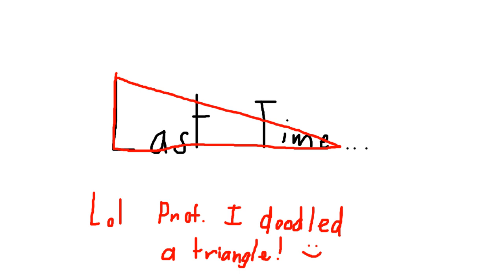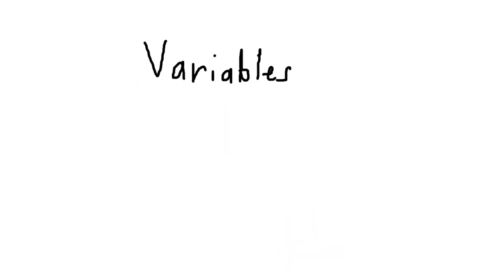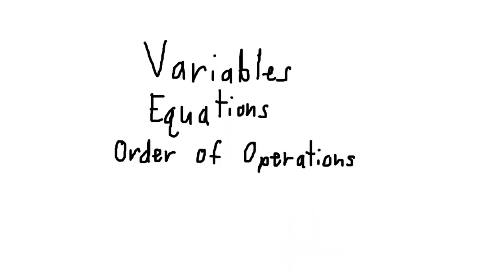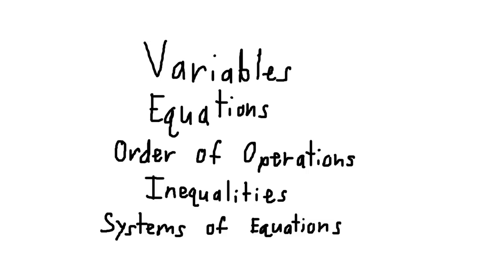Last time, on all of Algebra 1 Explained in 5 Minutes, we took a look at variables, equations, order of operations, inequalities, and systems of equations.